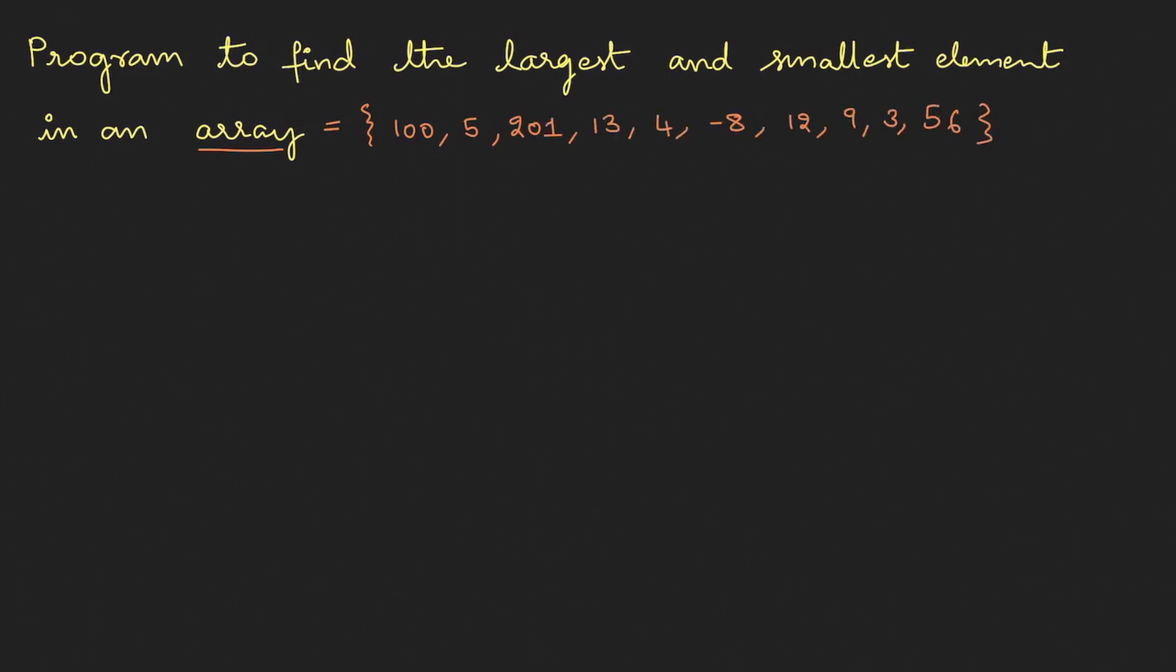These are the 10 elements. Now what we need to do is find the largest and smallest element. If I do it manually, I'll traverse the array - 100, then 5, then 201 - it's visibly bigger, and I don't see any number more than 201, so that's the largest. Similarly, when I traverse the array, I see that -8 is the smallest number. This is how we do it manually, but when you want to implement on a machine, this is the approach we're going to follow.